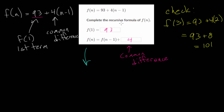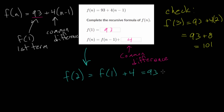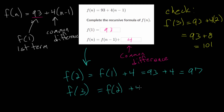Now let's use our new recursive formula to verify. To find the nth term, we take the previous term and add 4. We know the first term is 93, so for the second term we plug in n equals 2: f of 2 minus 1, which is f of 1, plus 4 — that's 93 plus 4, which is 97. For the third term with n equals 3: we take the second term, 97, and add 4. We get 101 — which matches what we found from the explicit formula. So we can feel confident our new recursive formula is correct.